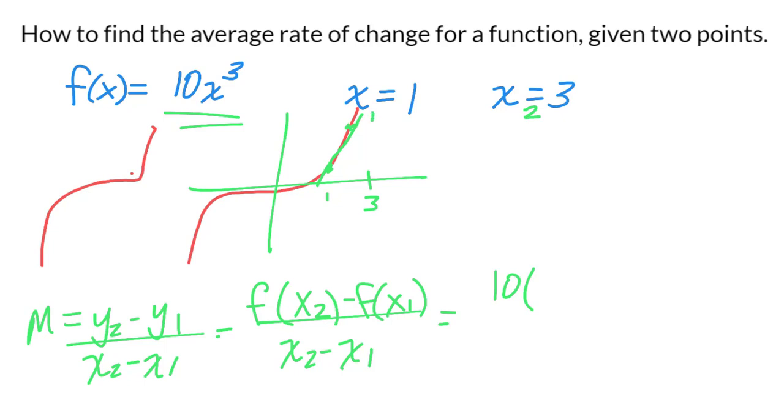Let's call this one x₂ and that one x₁. You always make the larger value x₂, so I would plug in 3, and that cubed, and then minus 10 times 1 cubed. On the bottom I would have the difference between my x's.